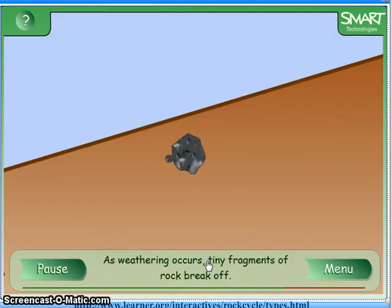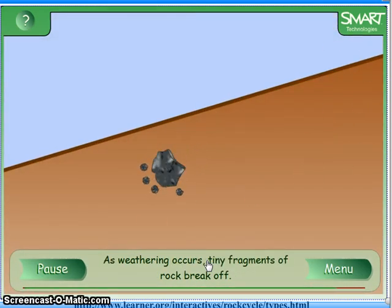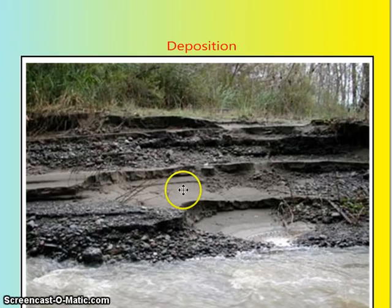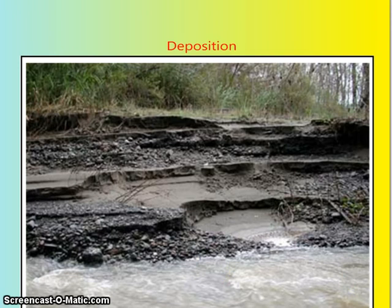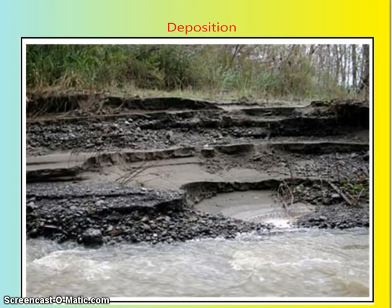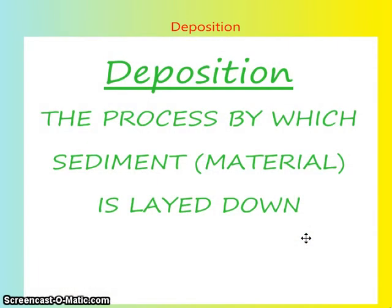The moment that rock begins to move, this is now called erosion. Remember that erosion is the movement of rock from one place to another. Now let's look at the top right-hand side of your sheet — it says deposition. A rock can't be rolling or moving forever; it can't keep blowing through the wind or riding on the waves of a lake or river. Eventually it's going to stop moving, and that is deposition.